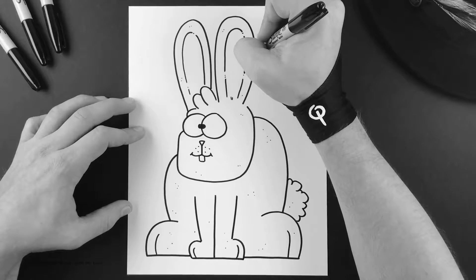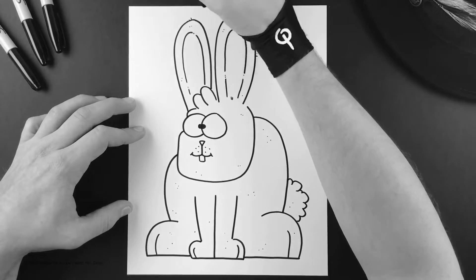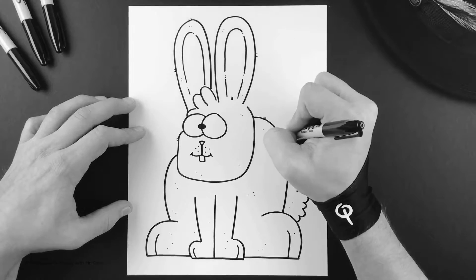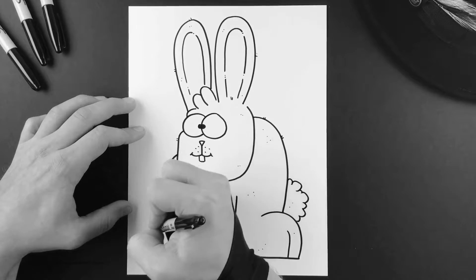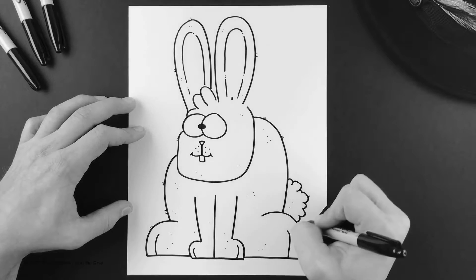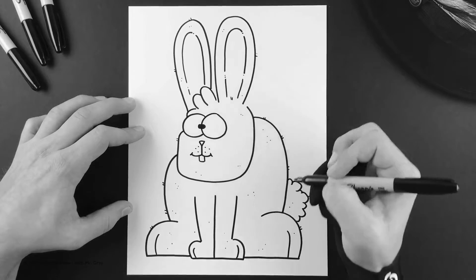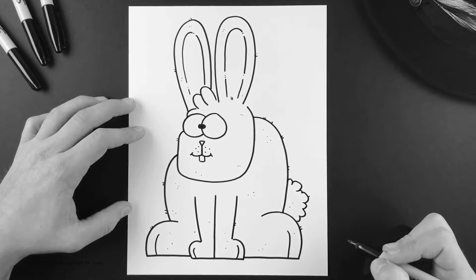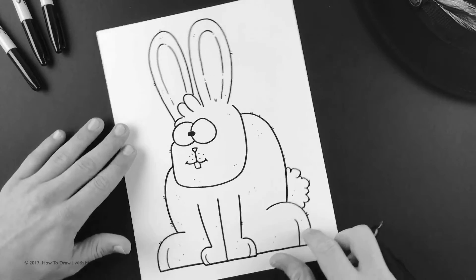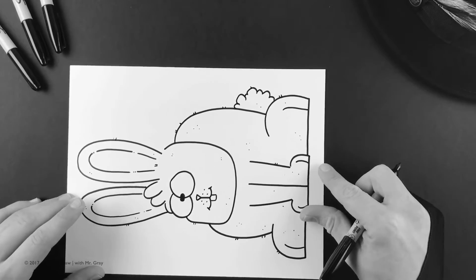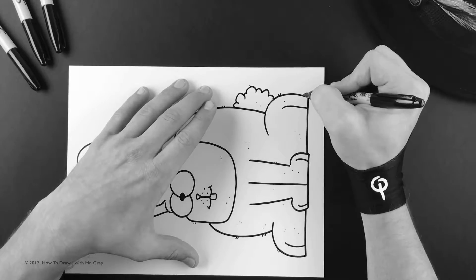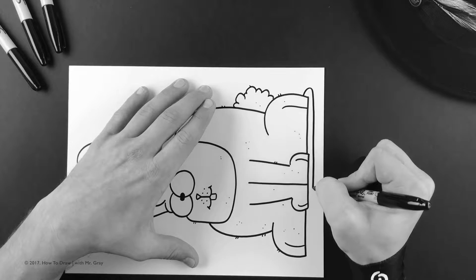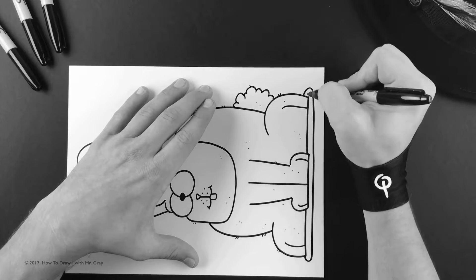And then I like to go back and add these little fur, little pieces of hair kind of sticking off. And you can do again as many as you want. And then lastly what I like to do at the end, I like to go in there and just add a nice little shadow so we know he's sitting on the ground.